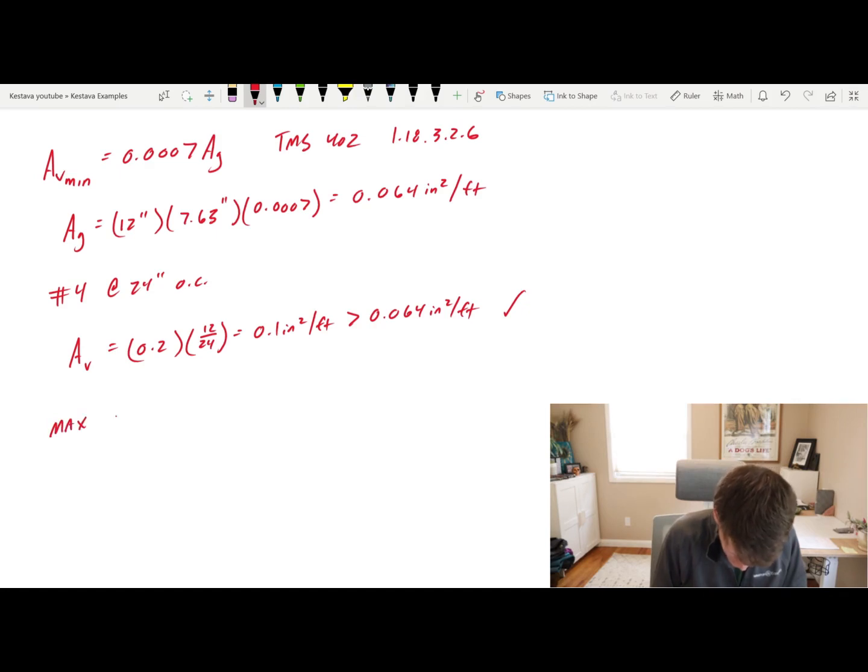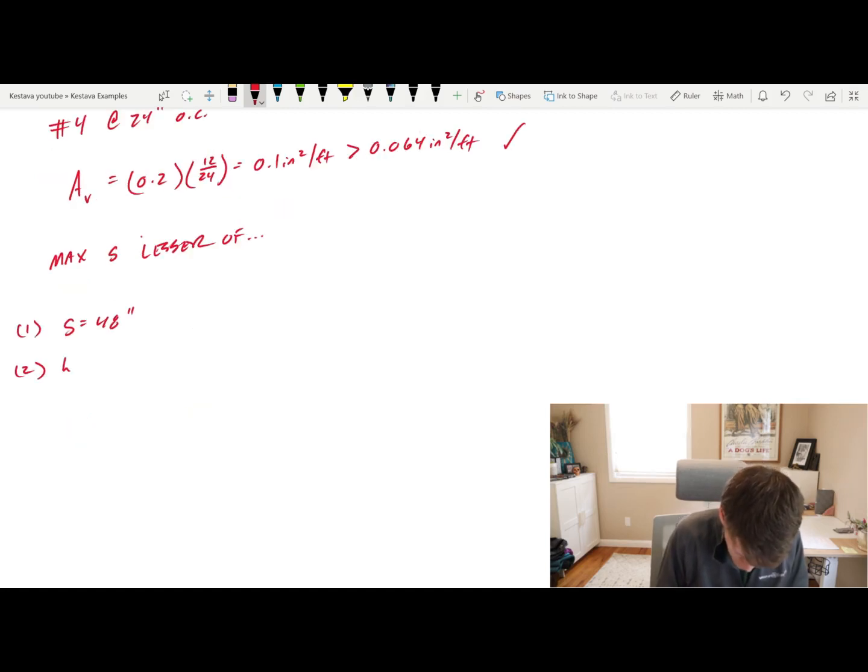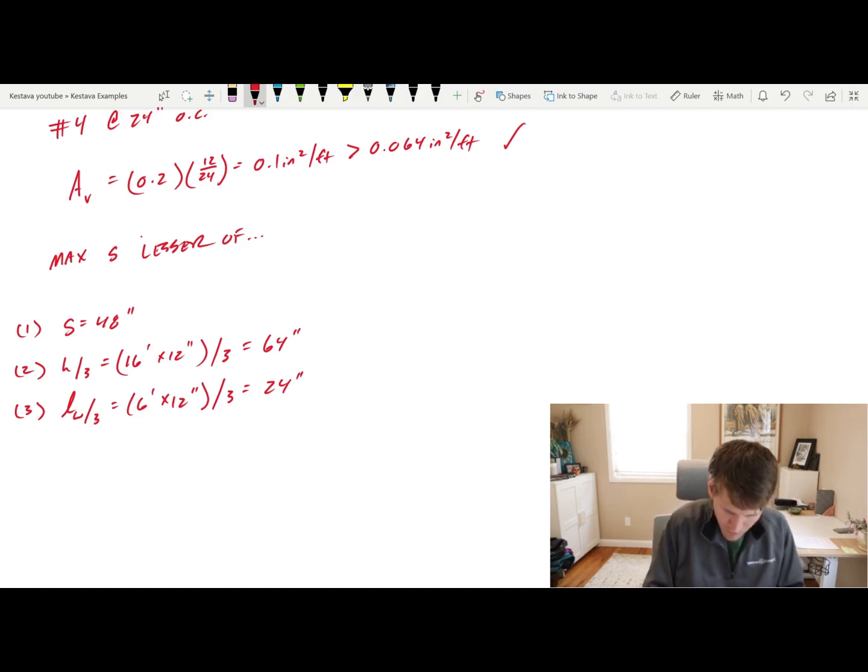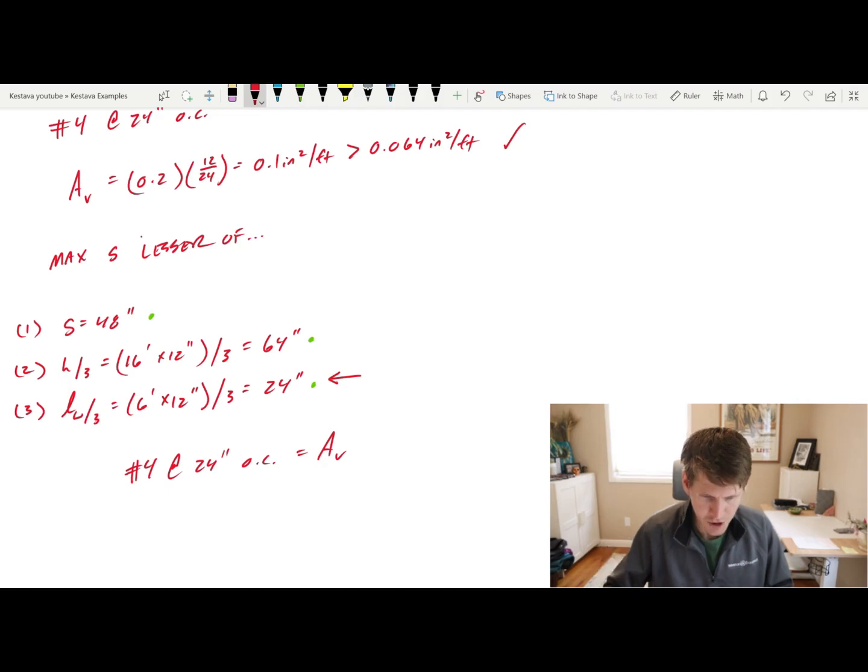So max bar spacing, S, is the lesser of the following constraints. S equal to 48 inches is number one. Number two is H over three, the height of your wall, which is 16 feet. Times 12 divided by three gets you 64 inches. And then case number three is LW over three, which is the length of our wall. So six feet, multiply by 12 divided by three. That gets you 24. Well, it's the lesser of all three of these scenarios, which is going to be this one. So 24 inches and we chose 24 inches on center. So we meet or are less than that distance. So we are okay to do number fours at 24 inches on center for our horizontal reinforcement in our CMU shear wall.